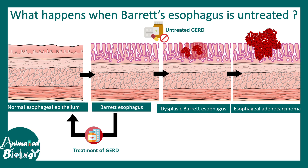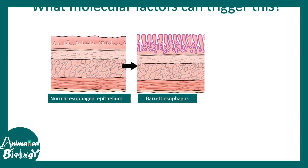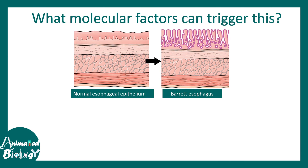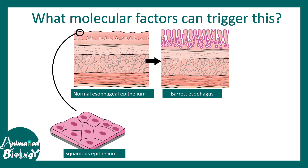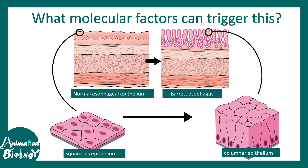This is the overall sequence. Now let's understand what molecular factors can trigger this phenomenon — what can change squamous epithelium into columnar epithelium. The process by which this transformation happens is known as transdifferentiation, where one type of adult or differentiated tissue converts to another type due to a stress — in this case, acid stress.